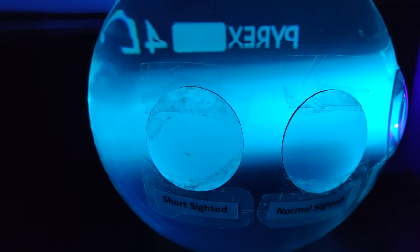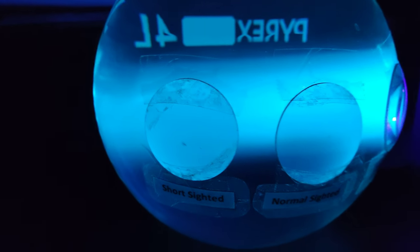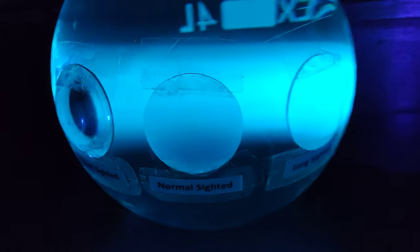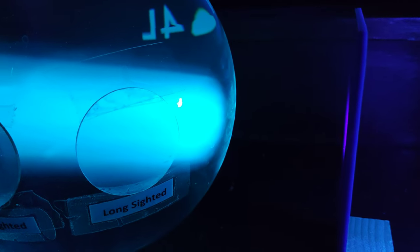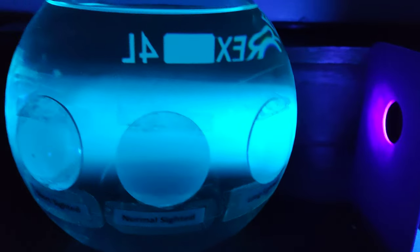Now what else have I got? Well, stuck to the side I've got a lens - this is my short-sighted lens - and I've got a normal sighted lens and a long-sighted lens. So what's this all about?